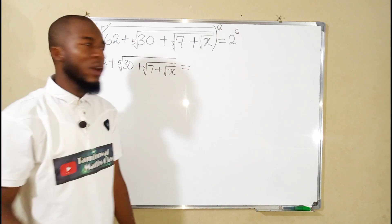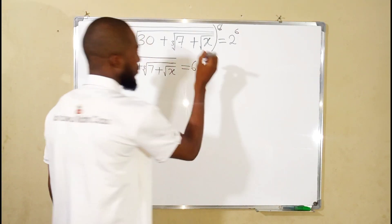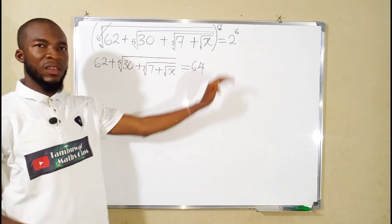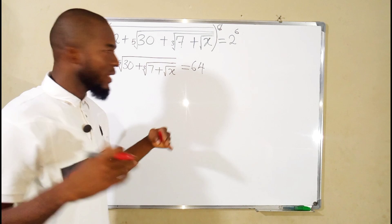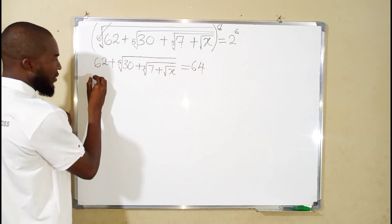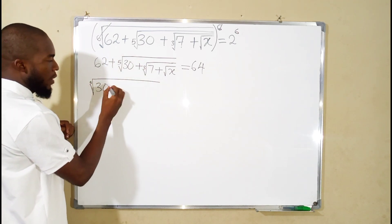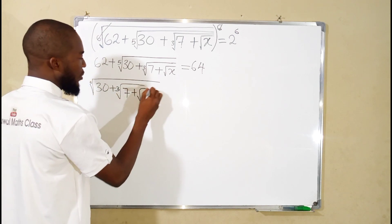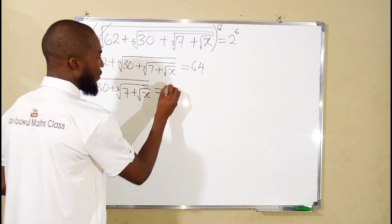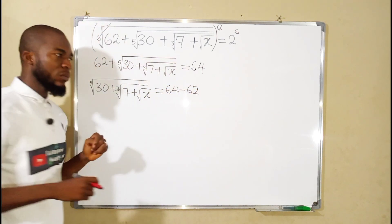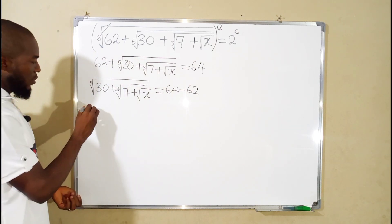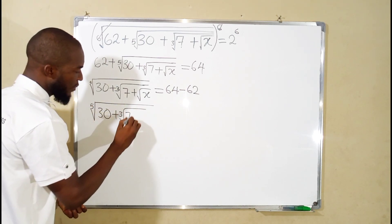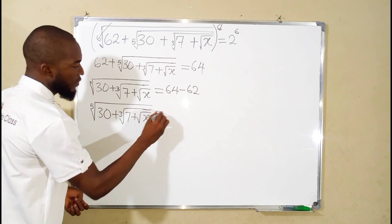On the right we have 2 to the power of 6, which is 64. We have real numbers on both sides, so we take 62 to the right — once it crosses over it becomes negative. We are left with the fifth root of 30 plus the cube root of 7 plus the square root of X on the left, and 64 minus 62 equals 2 on the right. So the fifth root of (30 plus cube root of 7 plus square root of X) equals 2.